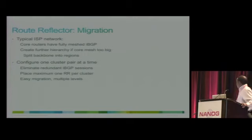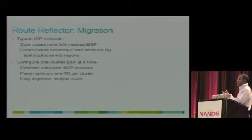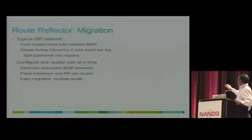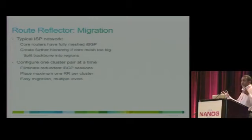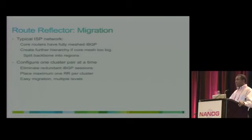The typical migration approach is: core routers have a full IBGP mesh or are used as route reflectors with a full mesh among themselves, and edge routers have IBGP client peering to the core routers. To migrate, identify two route reflectors, establish IBGP peering with them, and once established you can remove the full mesh peering gradually. Migration is gradual and easy.